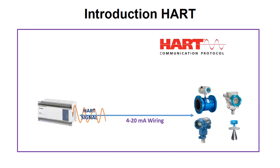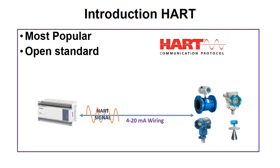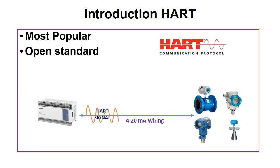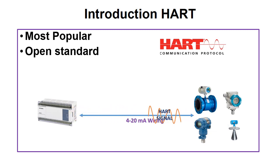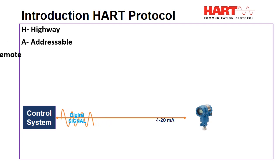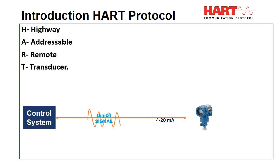HART is the most popular open standard communication protocol in the instrumentation and automation industry. HART is globally used to send and receive digital data using analog wiring between control systems and smart field devices like pressure, flow, level, or temperature transmitters, valve positioners, actuators, and many more. HART stands for Highway Addressable Remote Transducer.